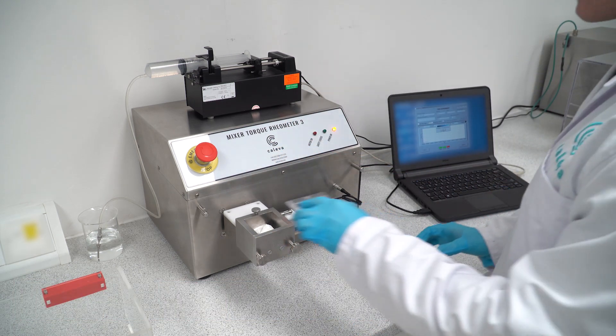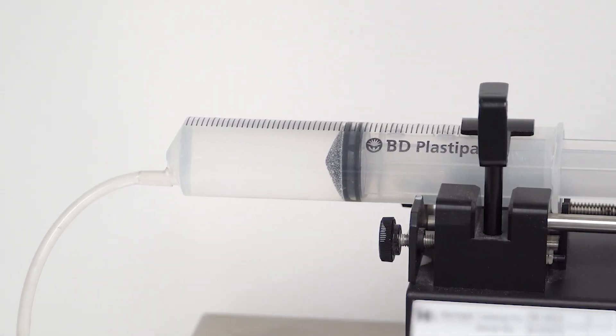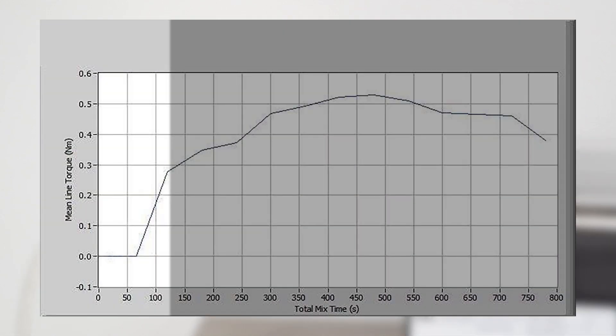The variable mix time test adds the optimum amount of liquid binder to your formulation in one step, instead of incrementally adding binder like the multiple addition test. This creates an instant torque response inside of the bowl.